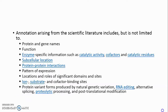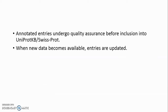Annotation arising from the scientific literature includes, but is not limited to: protein and gene names, function, enzyme-specific information such as catalytic activity, cofactors, and catalytic residues, subcellular location, protein-protein interactions, pattern of expression, locations and roles of significant domains and sites, ion/substrate/cofactor binding sites, protein variants, RNA editing, alternative splicing, proteolytic processing, and post-translational modification. Annotated entries undergo quality assurance before inclusion into UniProt/SwissProt, and when new data becomes available, entries are updated.